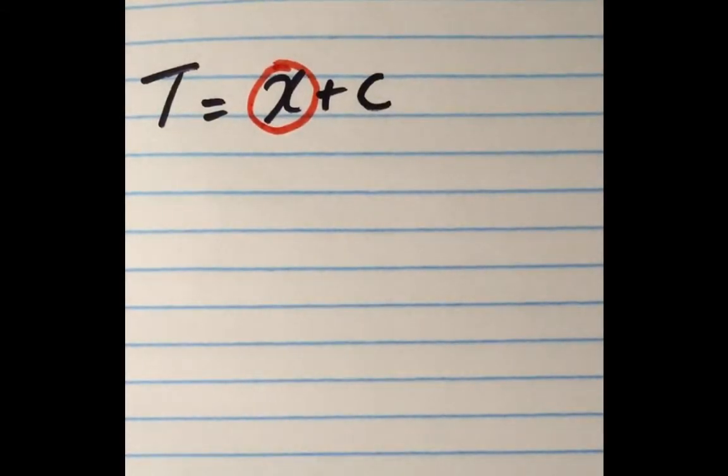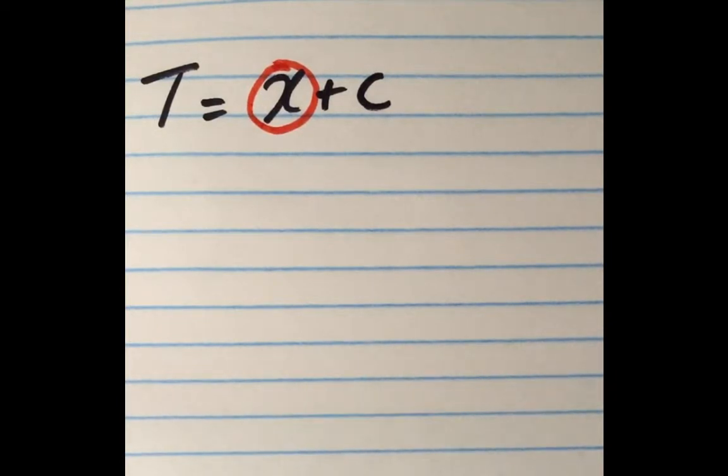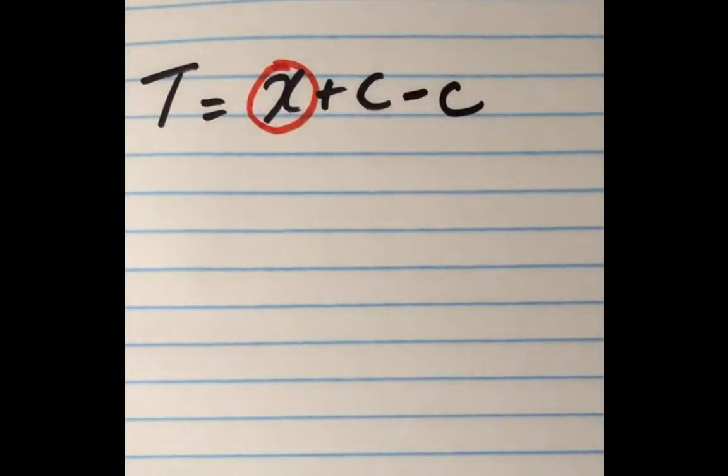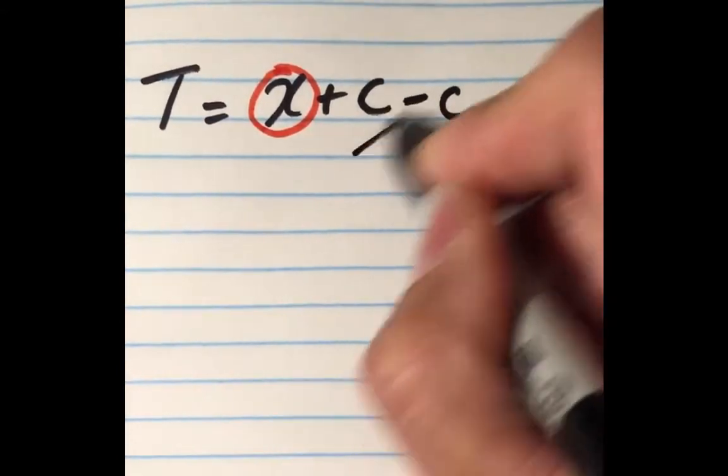What we will do is consider all the operations being performed to x, which is add c. To isolate x, what we'll do is simply subtract c. c minus c makes 0.